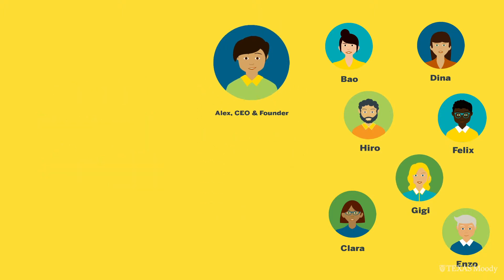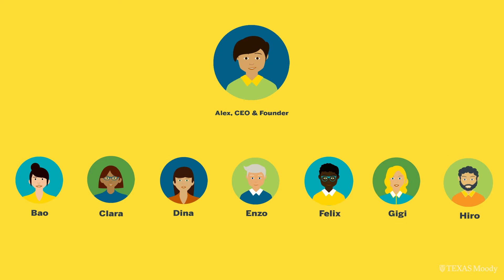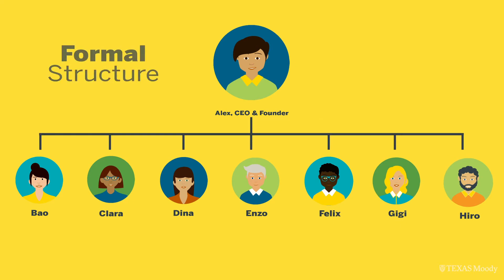Network analysis involves mapping of relationships between individuals. For example, this is a visual representation of the formal structure of Startup. As hiring took place, Alex decided to have everyone report directly. The relationship being mapped is who reports to whom. Here, everyone reports to Alex.